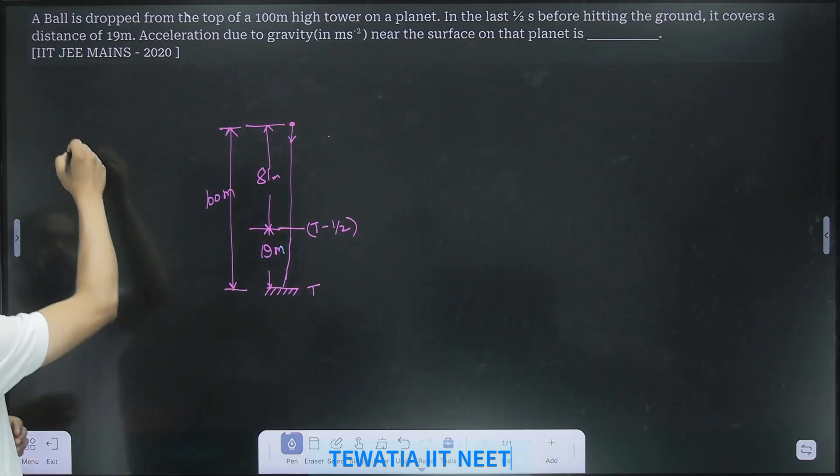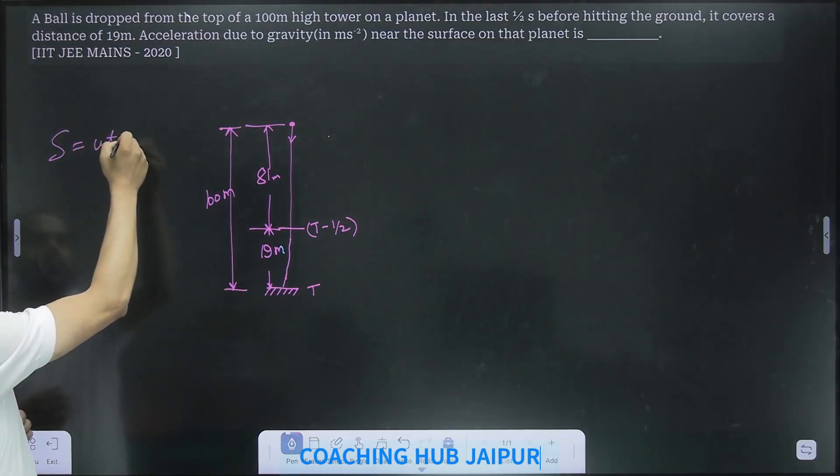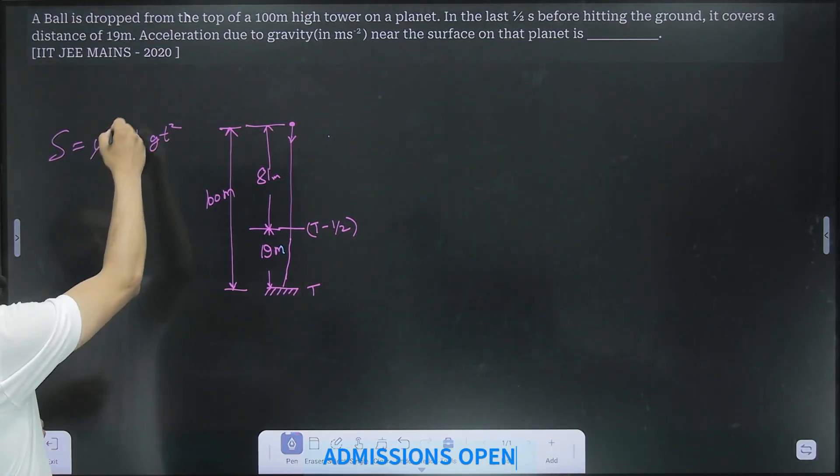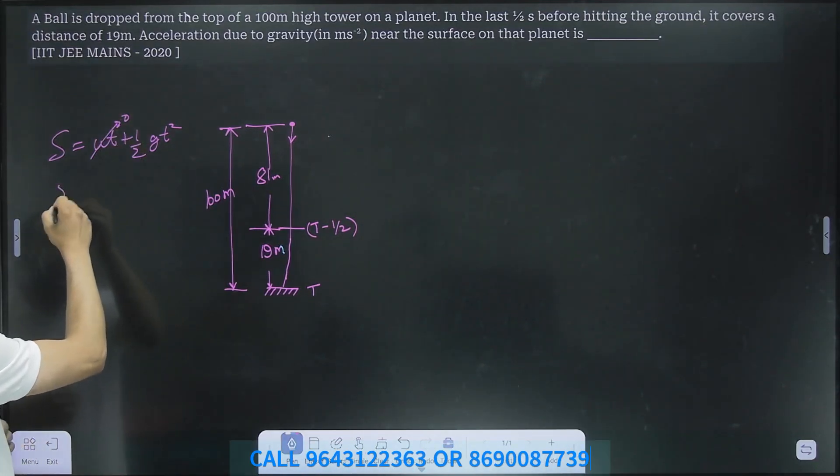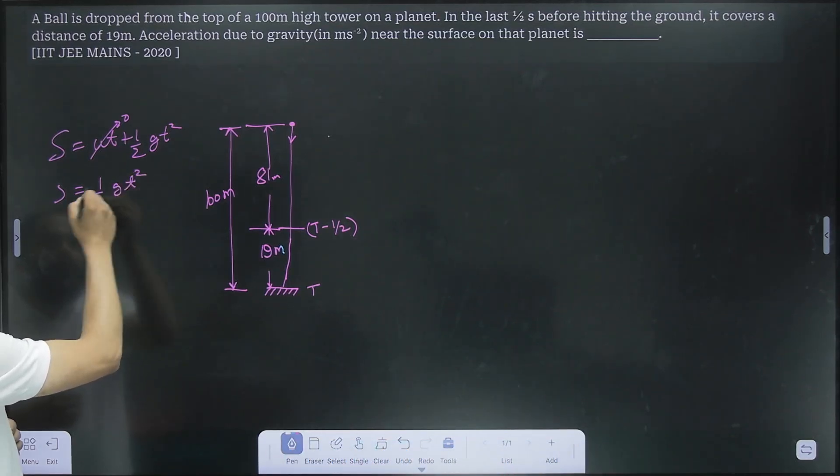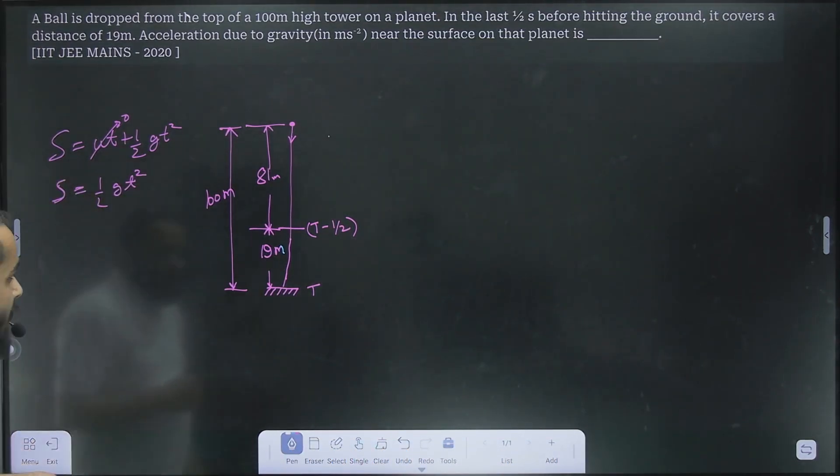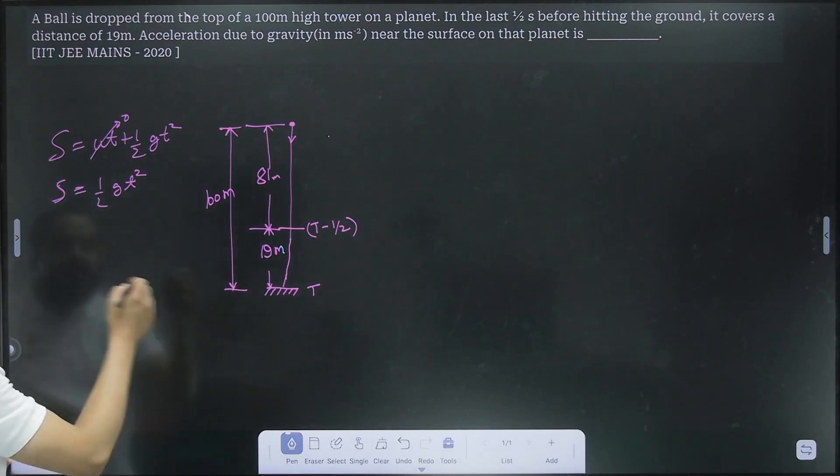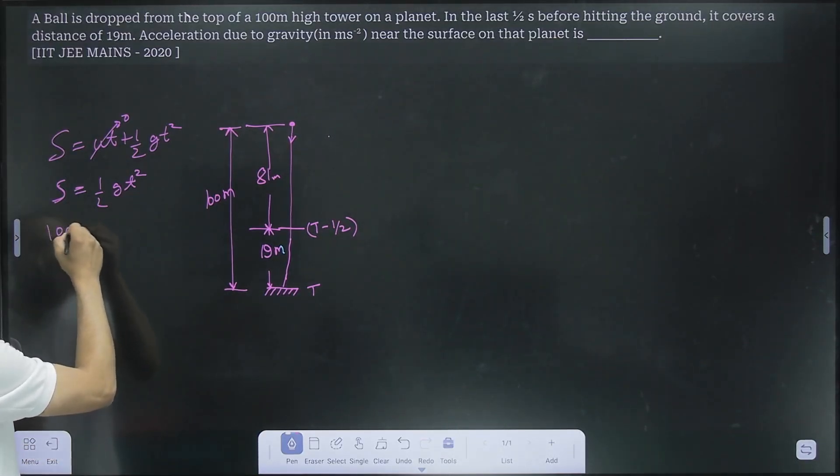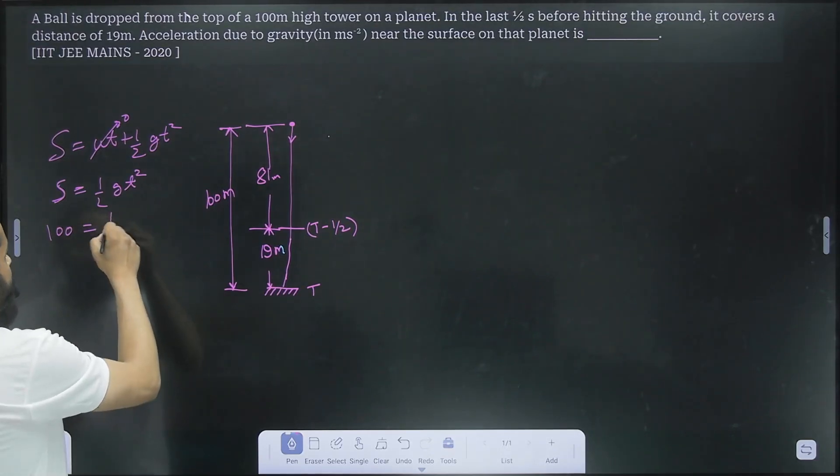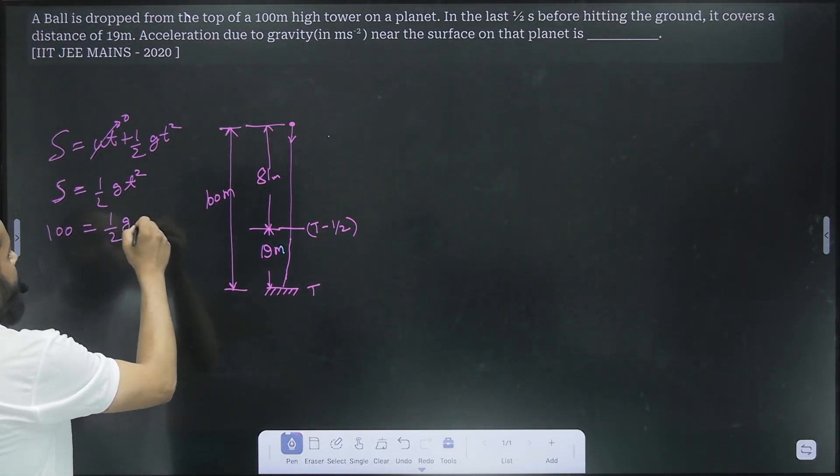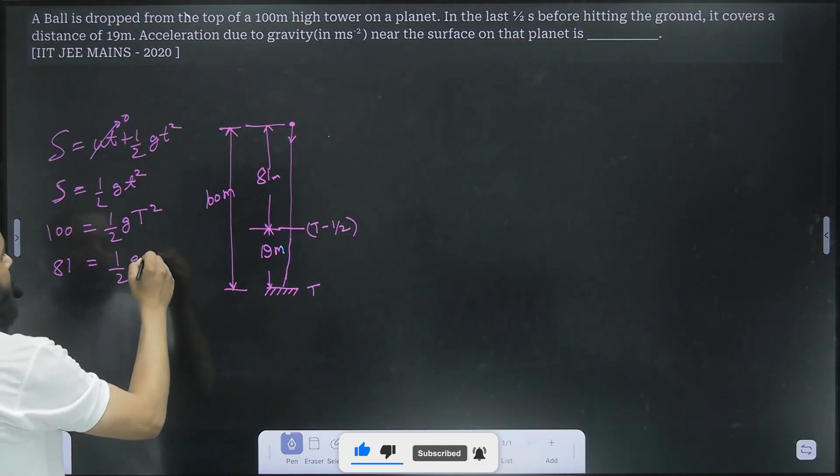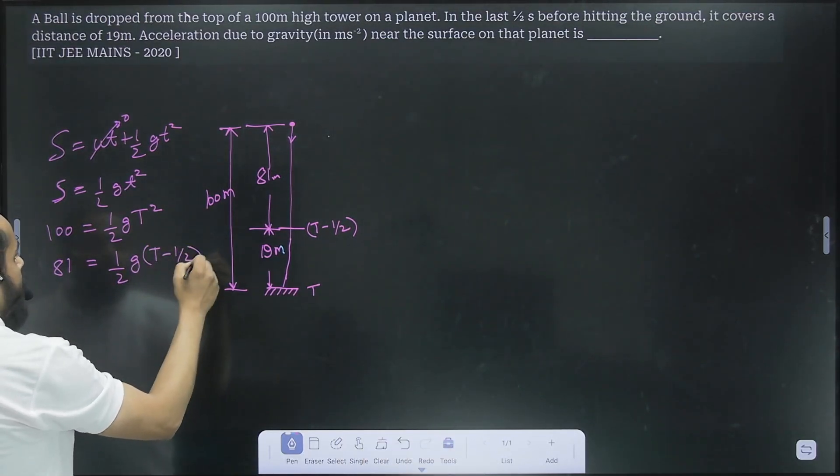So now you are tempted to apply this equation, s equal to ut plus 1 by 2 g t square. Because u is 0, we get s equal to 1 by 2 g into t square. Now you can easily see that we can get two equations like this with two variables. One is 100 equals 1 by 2 g into capital T square. And the other one is 81 equals 1 by 2 into g into t minus 1 by 2 whole square.